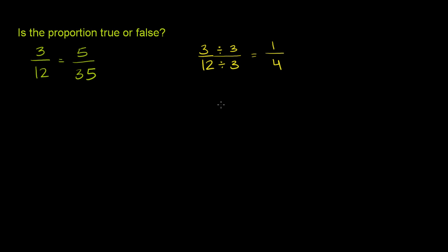So 3/12 is the same thing as 1/4. Now let's try to do the same thing for 5/35. 5 over 35, leaving some space so that we can divide.